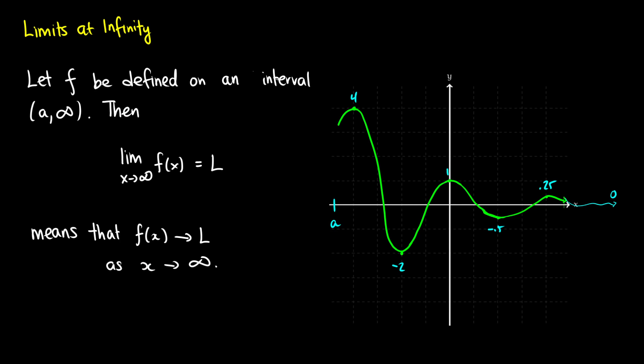We can assume that as this curve goes closer and closer to infinity — in other words as x grows bigger and bigger — eventually we're going to be hovering very slightly above and very slightly below 0. So if we have an interval from a to infinity, we say that the limit as x approaches infinity of f(x) is equal to L, meaning our function f(x) tends towards L as x tends towards infinity. Of course infinity is not a number; it is a value that x can trend towards. But we do use a very similar notation.